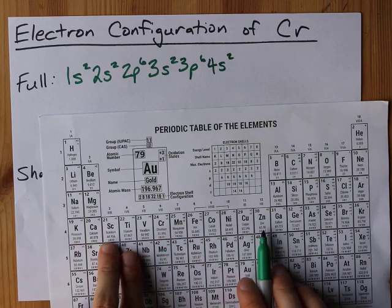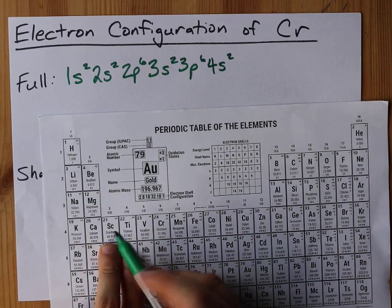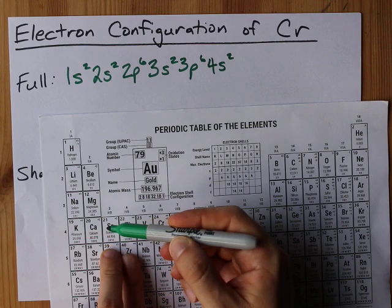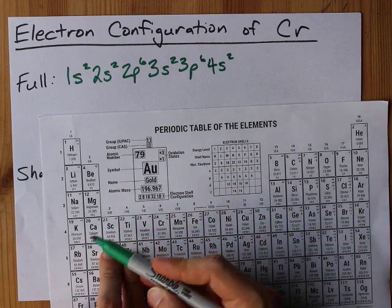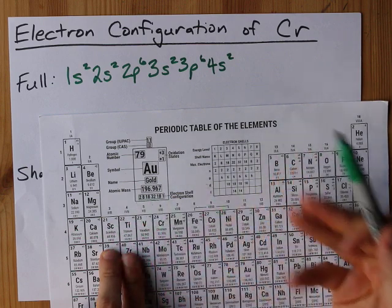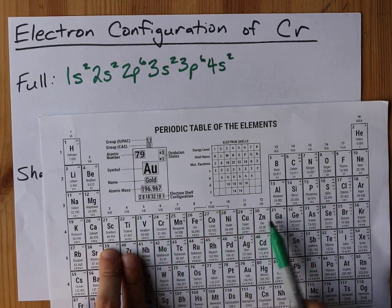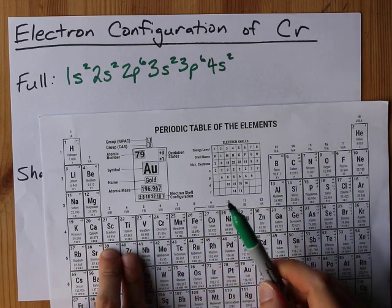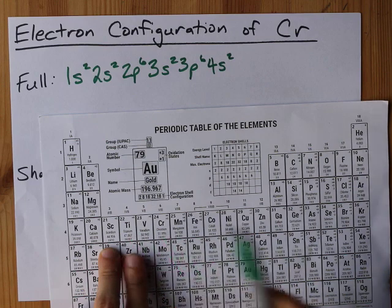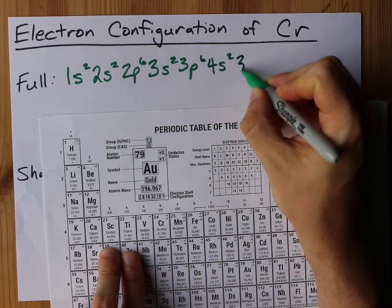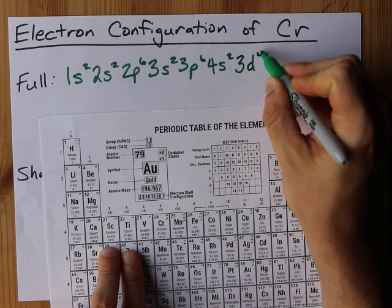And then by the time we get to the 3d block, please remember that right after 4s2 comes 3d. It is 10 electrons wide so we can hold up to 10 electrons. 10 elements wide holds 10 electrons. 1, 2, 3, we are 4 deep into that. So we write 3d4.